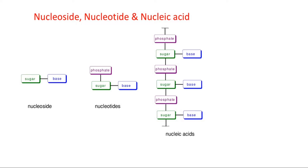First of all, what is a nucleotide? A nucleotide is made up of phosphate, sugar, and base. You can remember BSP — base, sugar, phosphate. The base is a nitrogenous base.